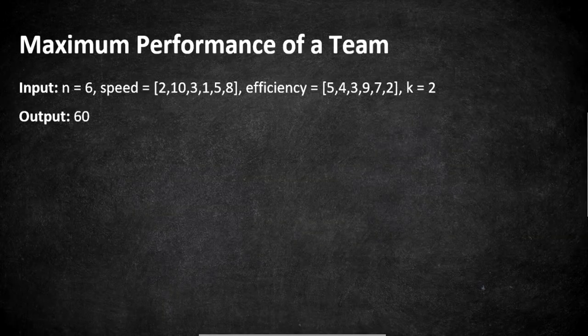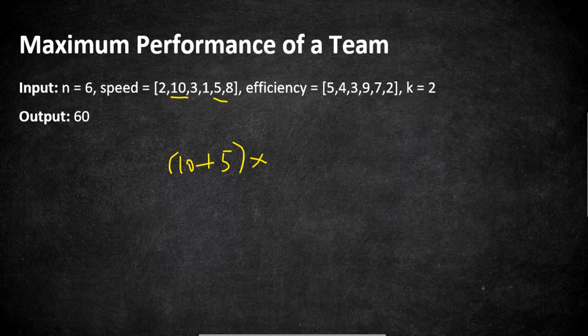We are trying to select employee number two and employee number five for our team. The performance is calculated as 10 plus 5, which is the sum of speeds of the selected employees, multiplied by the minimum of both their efficiencies. The efficiencies are 4 and 7, so the minimum is 4. We do 15 times 4 which equals 60 — that is our output.